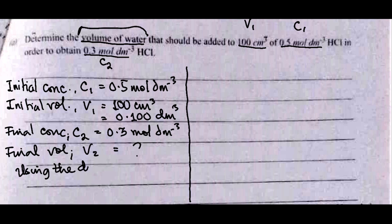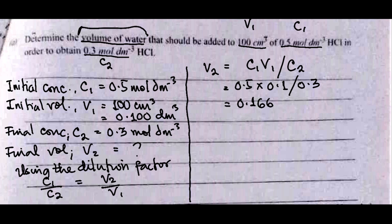Using the dilution factor, C1/C2 equals V2/V1. We have to get V2, so V2 will be equal to C1V1 over C2. That's 0.5 times 0.1 all over 0.3, which gives us 0.1667 dm³, or 166.7 cm³.